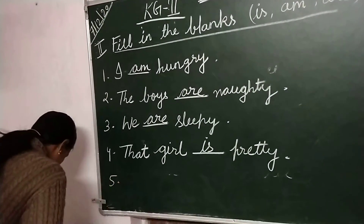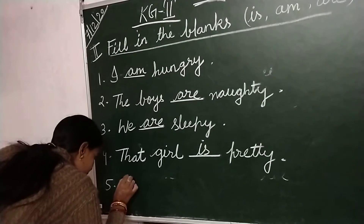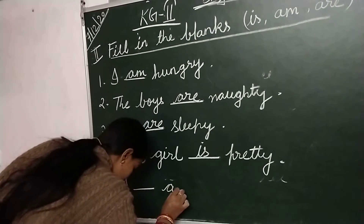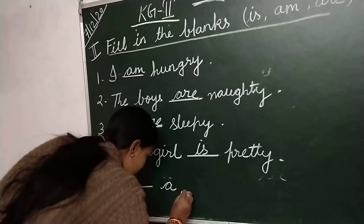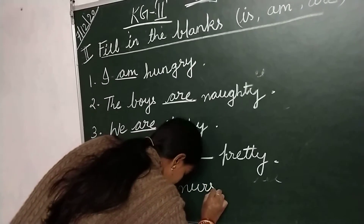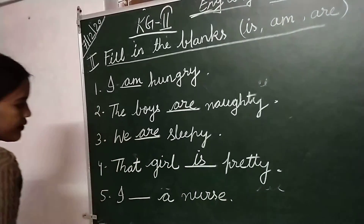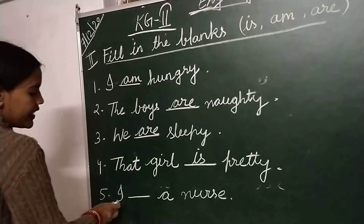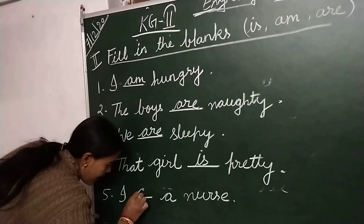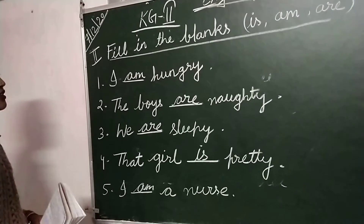Now last number is number 5: I dash a nurse. Write down: I am a nurse.